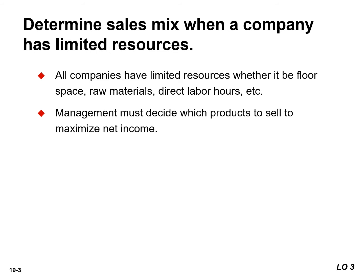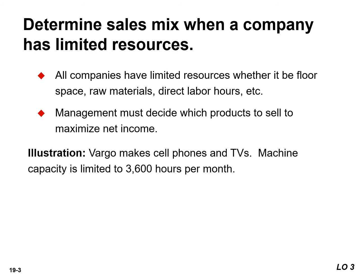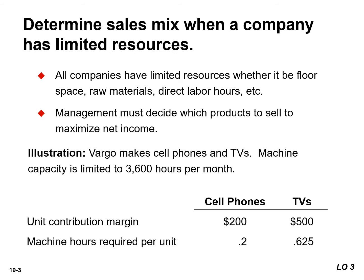To illustrate, recall that Vargo Video manufactures cell phones and TVs. The limiting resource is machine capacity, which is 3,600 hours per month.